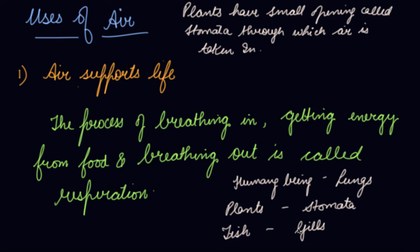Nitrogen is also required by plants for growth, but plants cannot absorb nitrogen directly from the air. During rain and lightning, nitrogen gets dissolved in rainwater and reaches the earth's surface. The soil absorbs it and converts it into nitrate compounds which are absorbed by plants. Nitrogen in the air is also used to manufacture fertilizers to help plants grow.